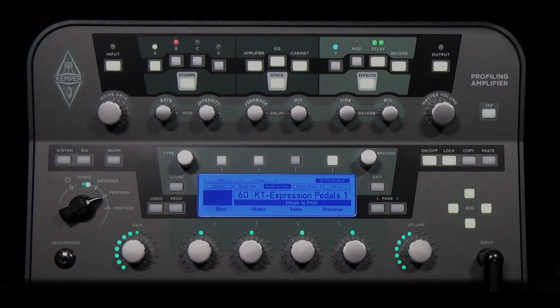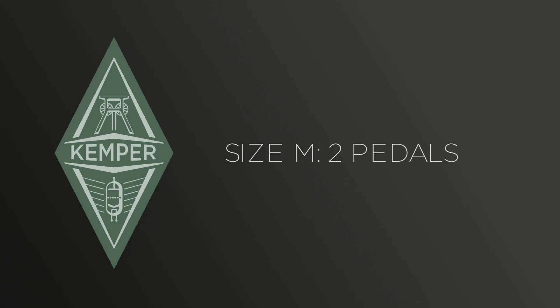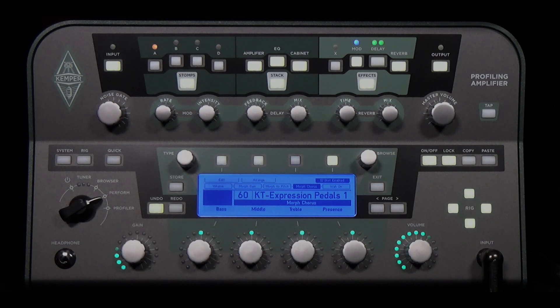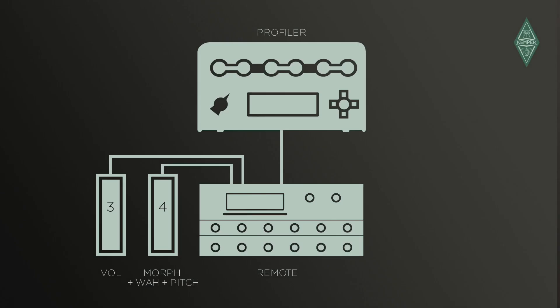You should take into account that the pitch function must always be picked up from the heel position. Using two pedals is a good compromise that saves space on stage, but still allows you to control all parameters with expression pedals. In this case, the wah function is also assigned to the morph pedal. We now have pedal 3 for volume and pedal 4 for morph, wah, and pitch.